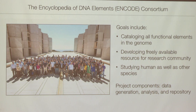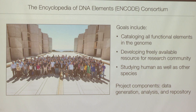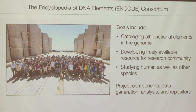We spent so much effort on this project because we are part of a very large consortium with roughly 500 members called the ENCODE consortium — the Encyclopedia of DNA Elements. The goals of ENCODE are very much like a resource-generating consortium: to catalog all functional elements including genes and regulatory elements in the human and mouse genomes, and to develop freely available resources for the research community. The project contains data generation, data analysis, and data repository, and my lab's participation is mainly in data analysis.